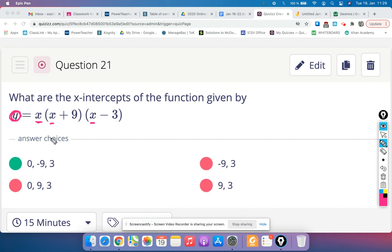So you could plug in these numbers. 0 certainly works because this is all multiplication. Negative 9 because negative 9 plus 9 is 0. And then 3 because 3 minus 3 is 0. So this is our answer.